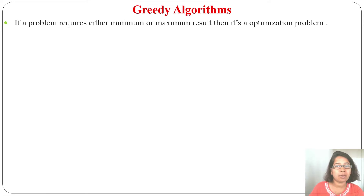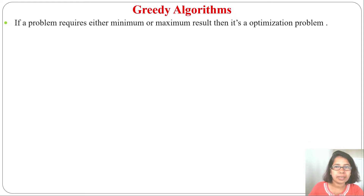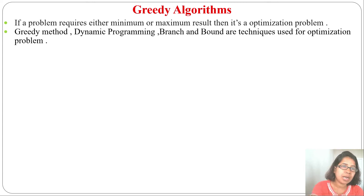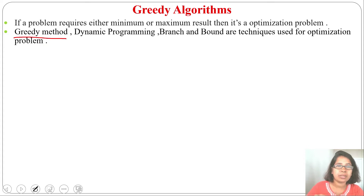Let's first understand what greedy method is. Problems that require either a maximum or minimum result are optimization problems. Optimization problems can be solved in three ways: greedy technique, dynamic programming, and branch and bound. In this chapter I will focus only on greedy method.